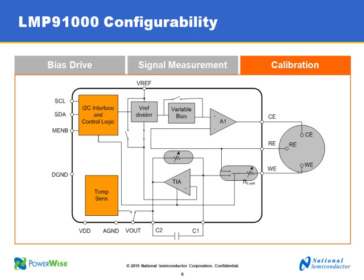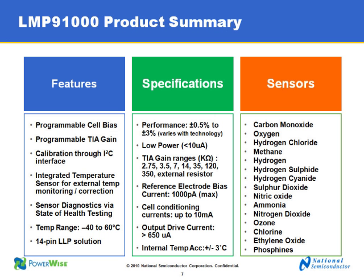Here we talk about calibration. As we all know, chemical cells can degrade over time, and health monitoring is very important and critical for your application space. We give you the provision to program through the I2C digital interface, which enables calibration and state-of-health monitoring. Calibration is enabled by an onboard temperature sensor with plus or minus three degree accuracy, which an external microcontroller can use to correct for performance over temperature.